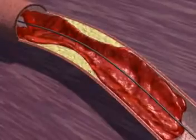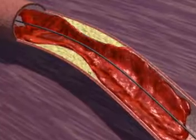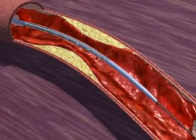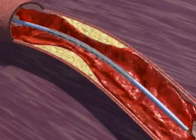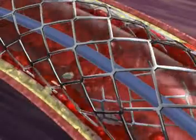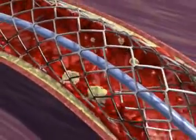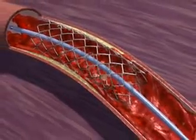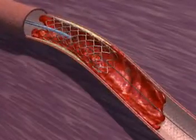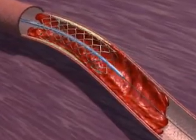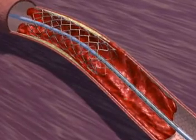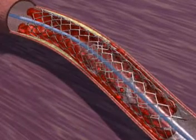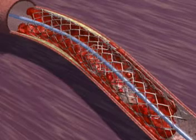Following balloon dilatation, a long atherothrombotic lesion remains. Stent placement compresses the residual clot under the stent struts and causes a cheese-grater effect. This results in additional thrombotic embolization. Due to the apparent long length of the lesion, a second stent is placed. Placement of this stent also causes some distal embolization.